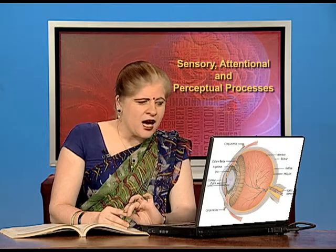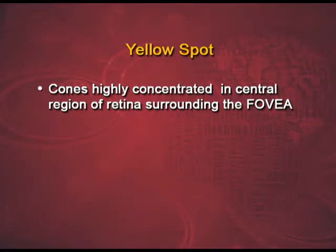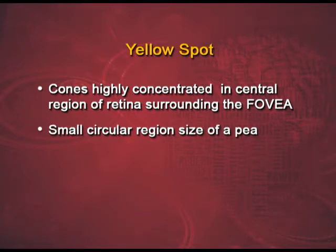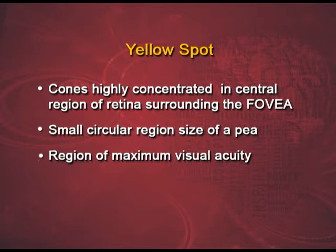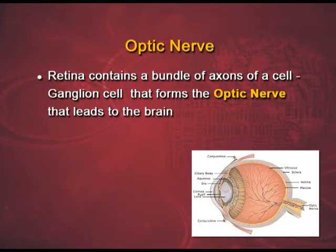Besides these, the retina has highly concentrated regions. There is a yellow spot in the retina. The cones are highly concentrated in a central region surrounding the fovea. A fovea is a very small circular region about the size of a pea — this is the region of maximum visual acuity because of the maximum number of concentrated cones around this region. The retina also has a very complex network of neurons forming the optic nerve, which contains a bundle of axons of ganglion cells that leads to the brain.